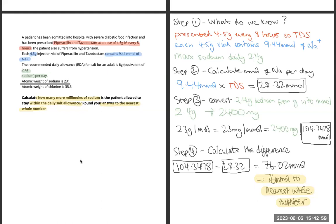Hi guys, welcome back to question number 12. This one is another one to do with molecular weights. With this question, what we have is a vial and we have the equivalent of millimoles for it. So each 4.5 gram vial of piperacillin and tazobactam contains 9.44 millimoles of sodium.